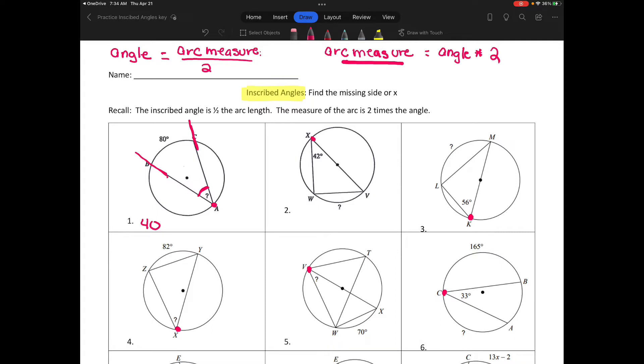In problem number three I have an angle and I'm trying to find the intercepted arc. If we extend these, the intercepted arc is opposite this angle. So this arc would be 56 times 2, because if I'm finding an arc measure I multiply by two. This would be 56 times 2, which would be 112.